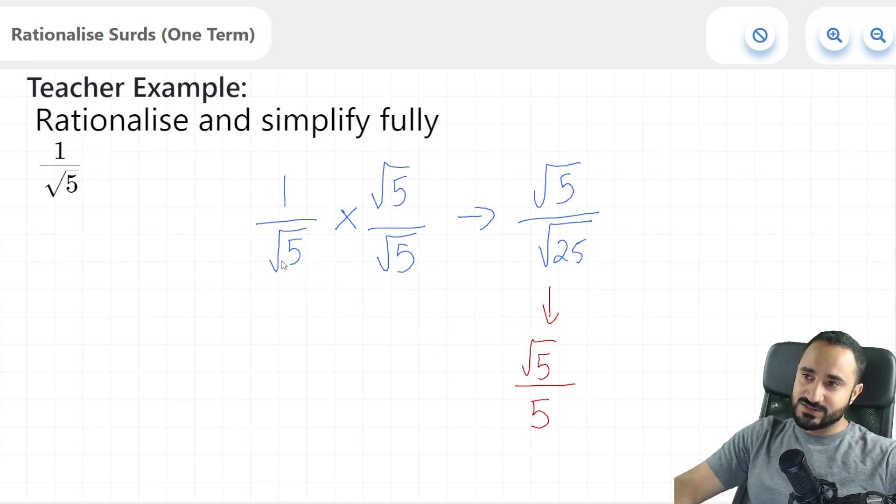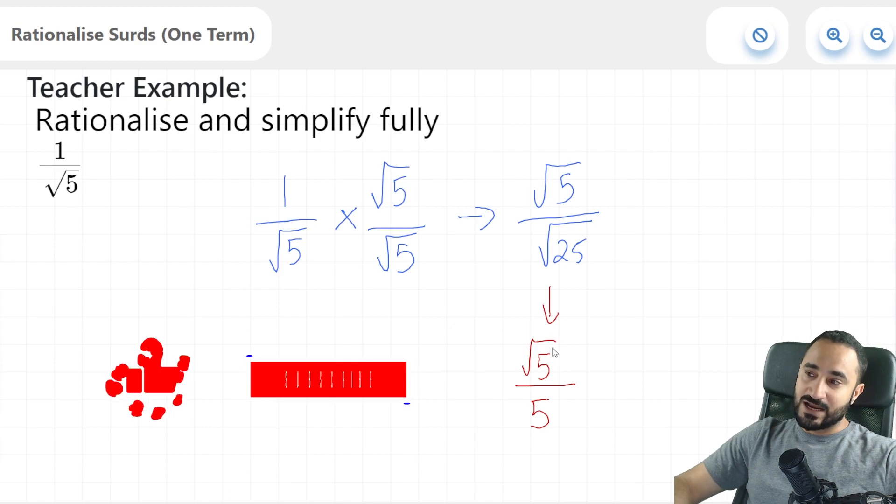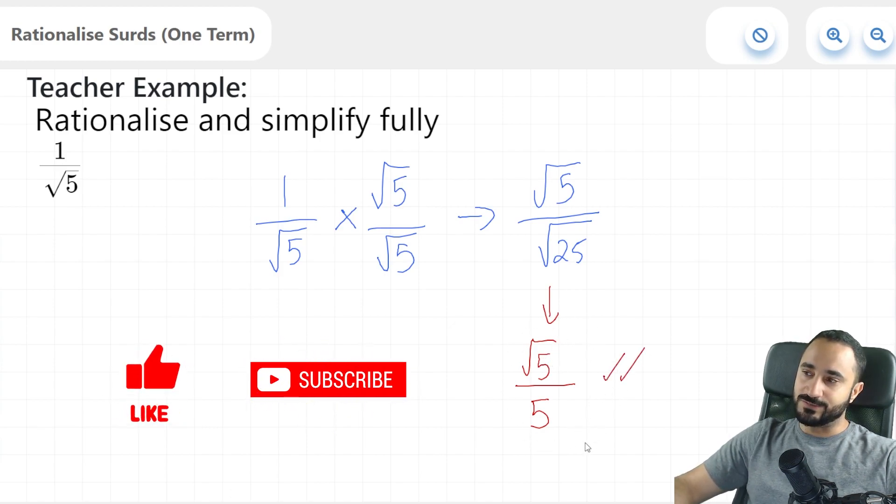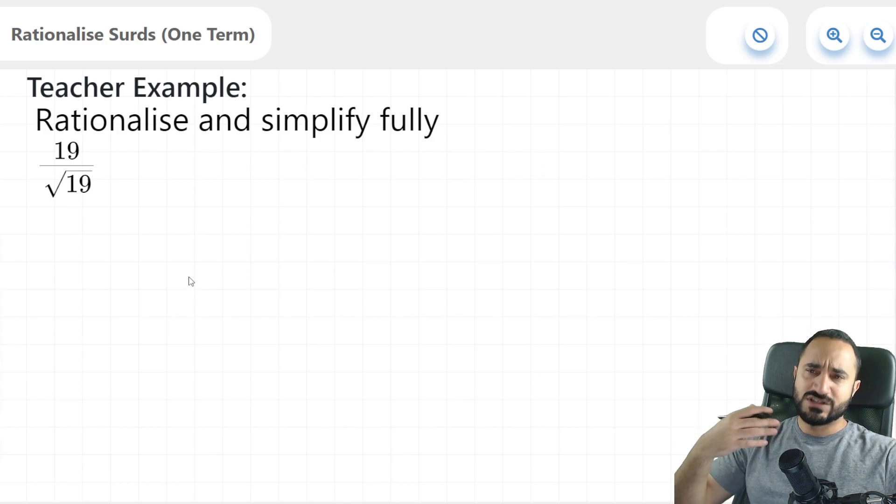So there we have it. This is the final answer. You've rationalized the denominator. It used to be the square root of 5. It is now just the whole number 5. And the numerator is now root 5, which is absolutely fine. This is the final answer. Now let's take a look at a more difficult example.